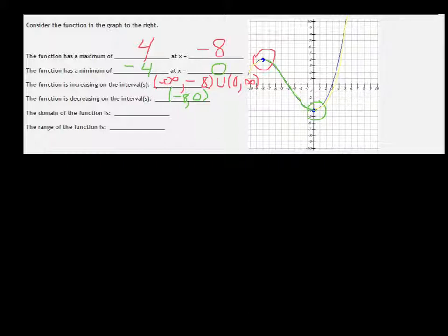The domain, it appears that the domain is going to be all real numbers. We can't see what happens to the graph past negative 10 and 10, but since there aren't points indicating that it ends there, I'm going to assume that it keeps going.